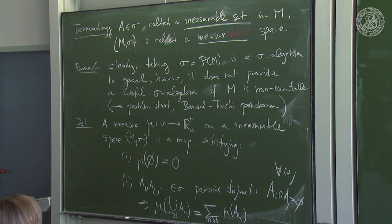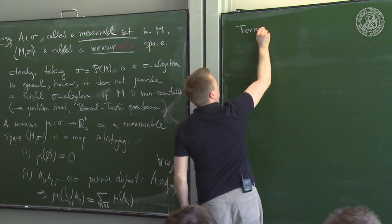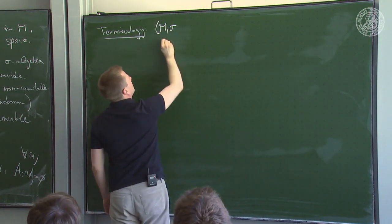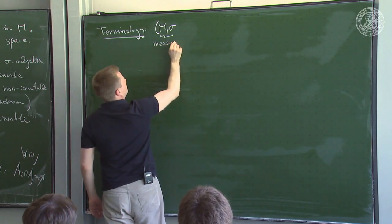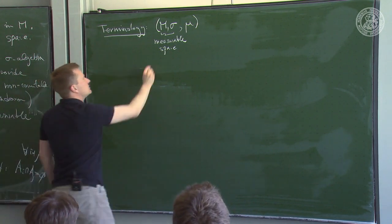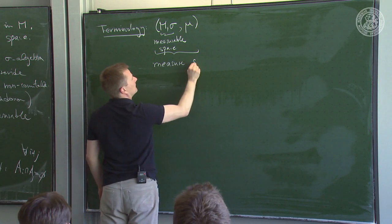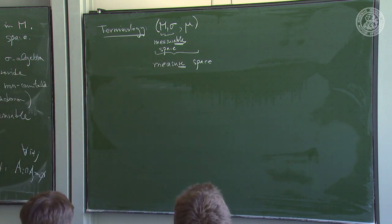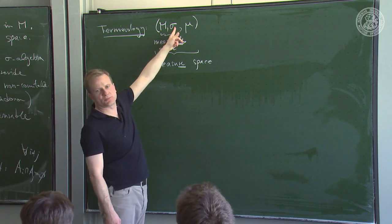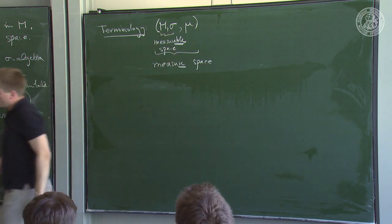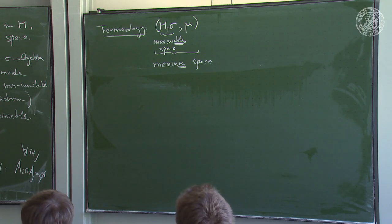The triple (M, σ, μ) — a measurable space together with a measure — is called a measure space. The measurable space is just the pair (M, σ), and adding the measure gives the full measure space.